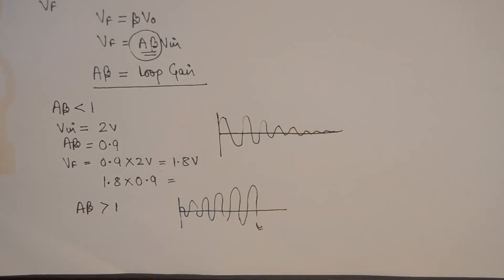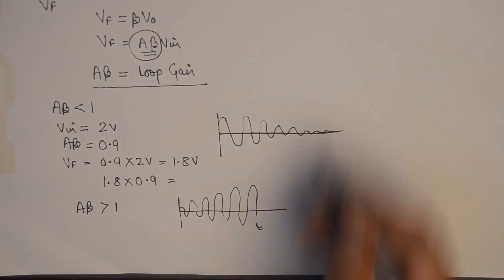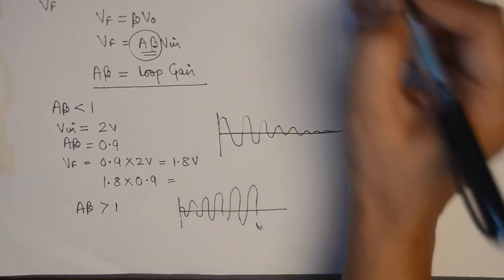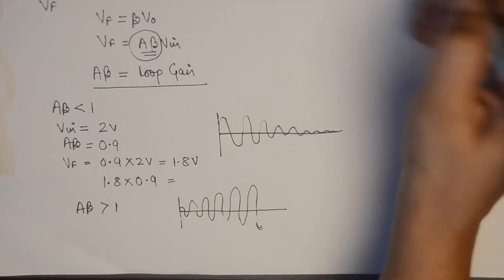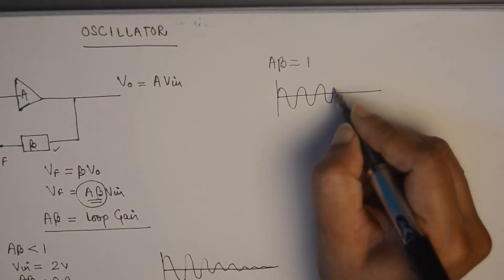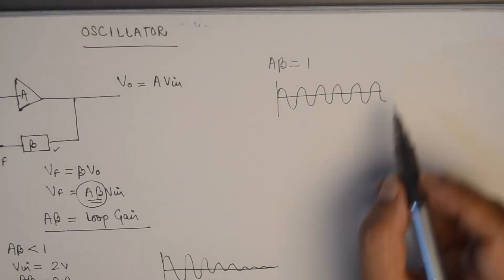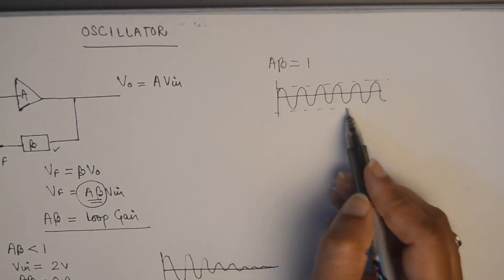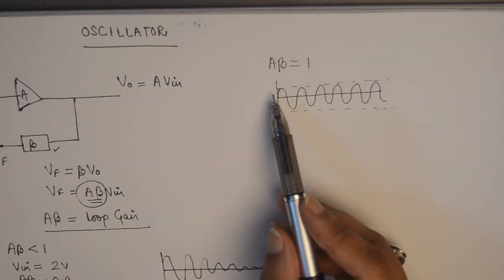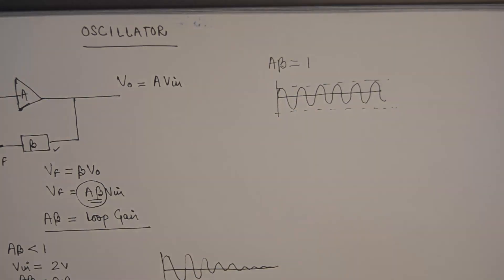In any application we would like to have sustained oscillations of a particular frequency, and in order to have sustained oscillations the loop gain A·beta has to be equal to unity. Whenever A·beta is kept equal to unity, at the output of the oscillator I see sustained oscillations — not dying out and not building up, remaining at a constant amplitude. This is what we want from an oscillator. This is the very critical determining factor of how the oscillator behaves and what kind of oscillations it provides at the output.